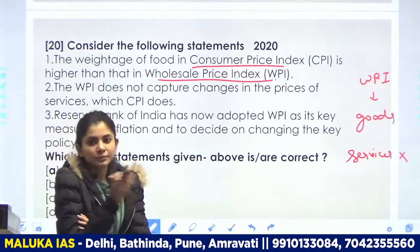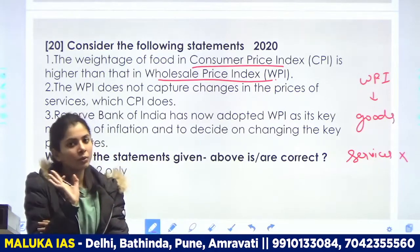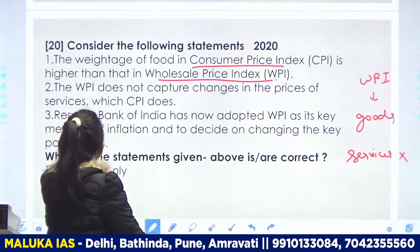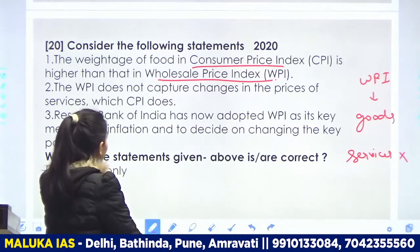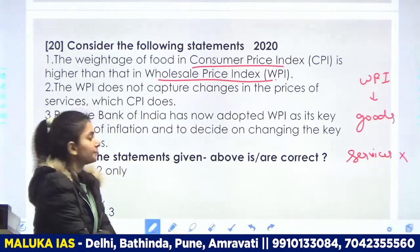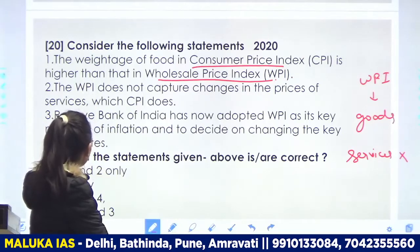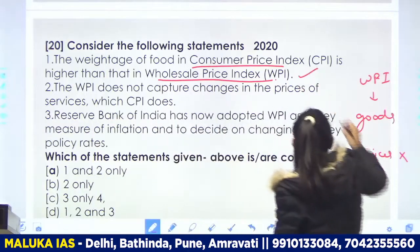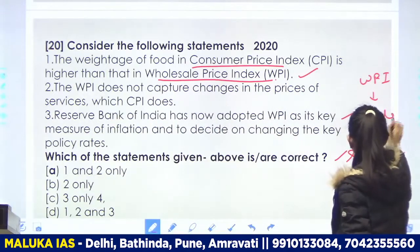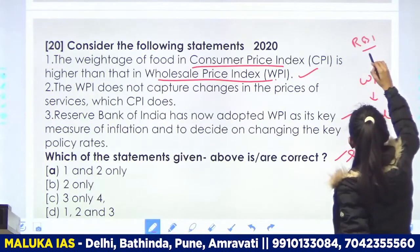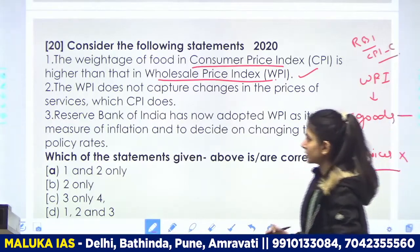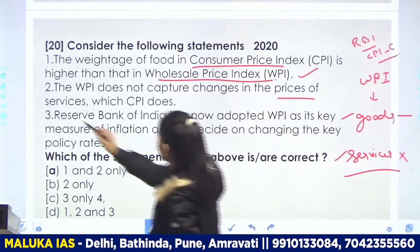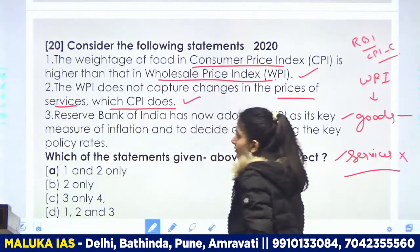CPI — consumer price index — mein goods aur services dono include ki jaati hain. Lekin they are saying ki food ka weight jo hai CPI mein higher hota hai than in wholesale price index — yeh aapko yaad rakhna hoga. CPI mein food ka weight WPI se zyada hota hai. Next: WPI does not capture changes in prices of services while CPI does — yes, kyunki WPI mein services include hi nahi ki jaati.